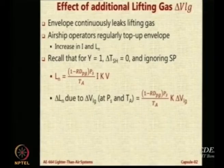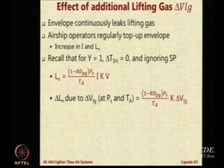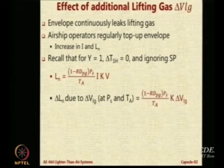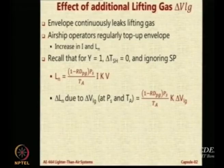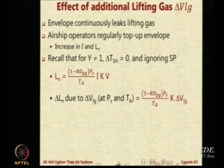So delta N because of delta VLG will be essentially a subtraction, and subtraction is already taken care of. If you replace V with delta V — delta VLG, not the envelope, since the envelope volume also remains the same — then if you add delta VLG amount of gas, the additional net lift will be (1 minus Rd_PG) times PS divided by TA times I times K times delta VLG. There is no I here because you are not looking at a fraction of the total; you are adding so much gas and will directly get so much additional net lift.